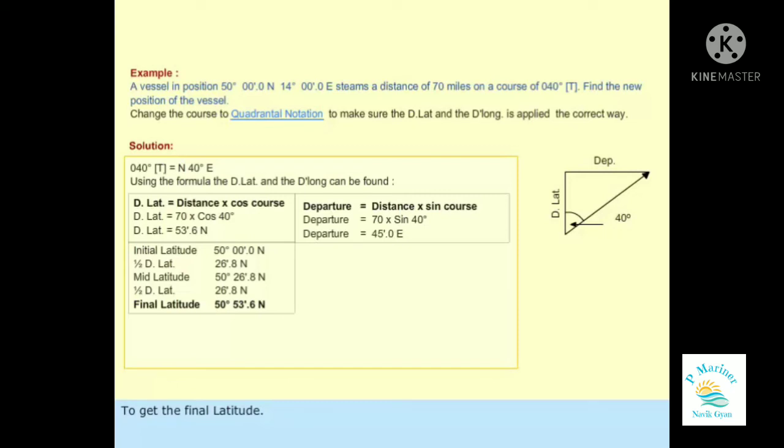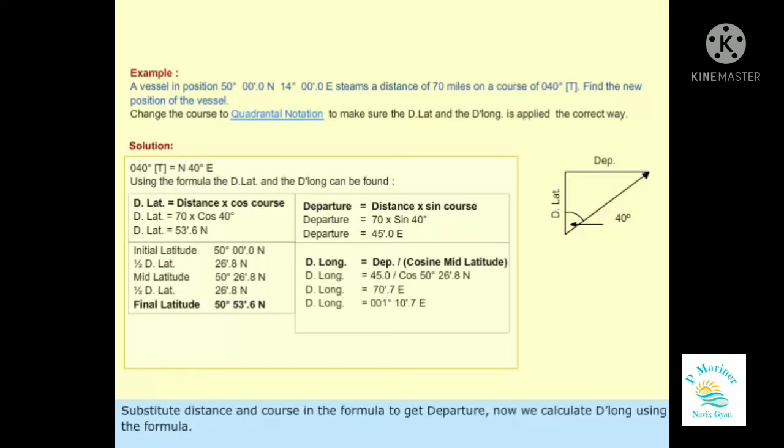Now we can calculate departure using the formula: Departure equals distance times sine co. Substitute distance and course in the formula to get departure.